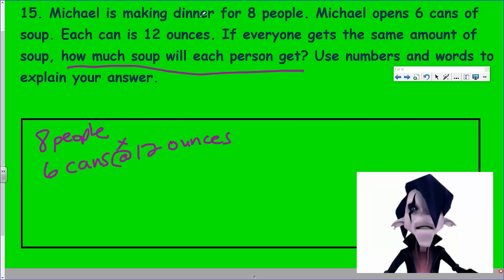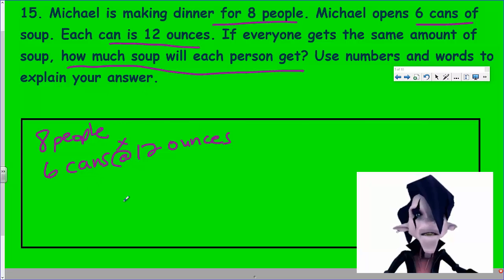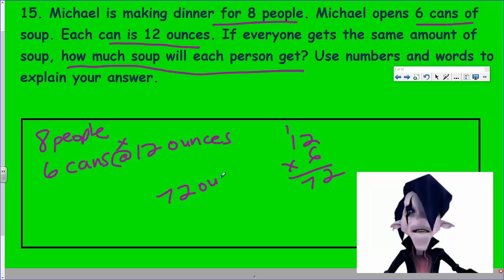If everyone gets the same amount of soup, how much soup will they get? We know there's eight people altogether, six cans going to have 12 ounces. We're trying to find out how much soup will each person get. We can't really determine that this way because six cans and 12 ounces are two different units. Six cans won't obviously be enough, so we're going to figure this out in ounces. 12 times 6 is 72. Two, carry the one, six times one plus one is 72.